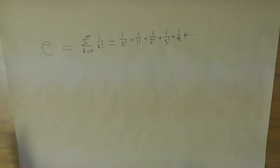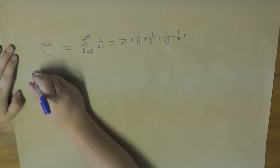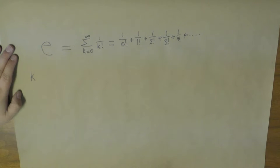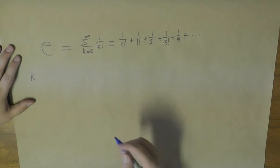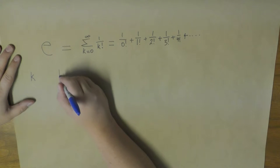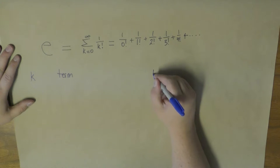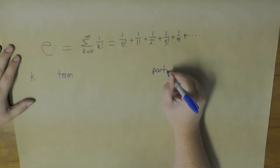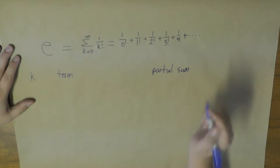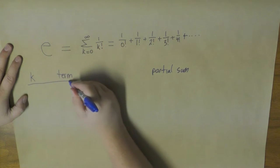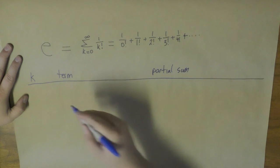I'm just going to show you what this evaluates to — how this evaluates. So we'll have the k value here, that'll be 0, 1, 2, 3, and so on. We'll have the term value. And then over here we'll have the partial sum. It's called a partial sum because it doesn't include all the terms. So we can look at this table as we go.